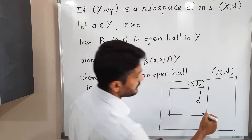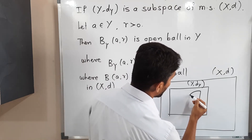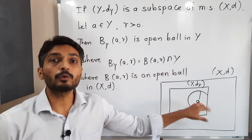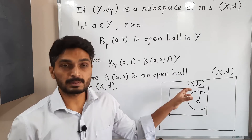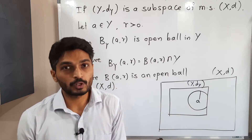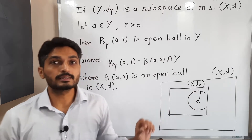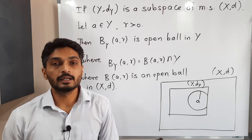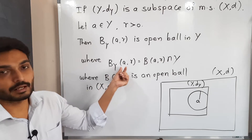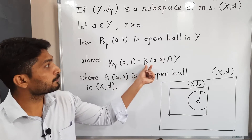Suppose this is radius r. I take this radius and draw an open ball around a. The ball would look like this - but I cannot go beyond Y since we are drawing a ball in the subspace Y. Some part of that ball goes outside Y but I cannot include it, since I am considering an open ball in (Y,dY). So this is an open ball in the subspace (Y,dY) with center a and radius r.